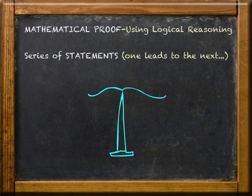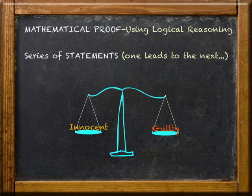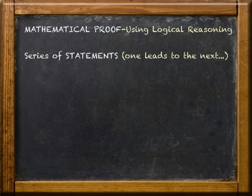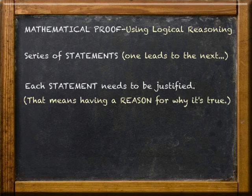And just like in a court of law, where a lawyer uses logical reasoning to prove that someone is innocent or guilty, there are specific rules that must be followed. And here's one of the main rules. Each statement you make in your proof must be able to be justified. That means you have to be able to state a reason for why it's true. And what might those reasons be?